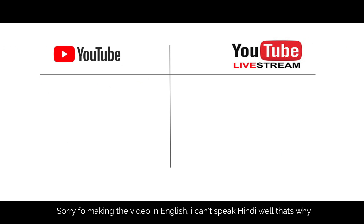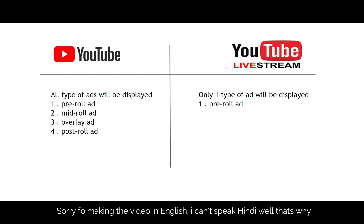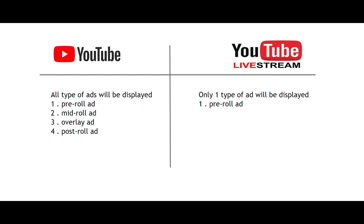There are two types of videos in YouTube: traditional YouTube video and YouTube live stream. For a traditional YouTube video, all four types of ads will be displayed. But for a YouTube live stream video, as of now only one type of ad will be displayed — that is the pre-roll ad. So we can clearly say that for a normal YouTube video there will be a lot more money when compared to a YouTube live stream video. For live stream, there is also a super chat option available, but according to views, normal video will have more money.